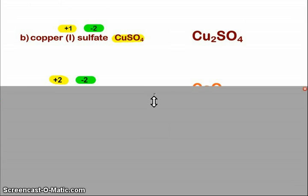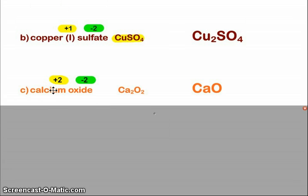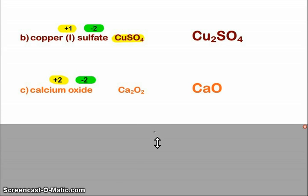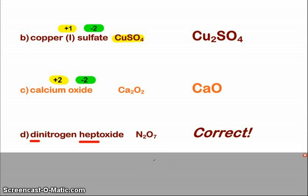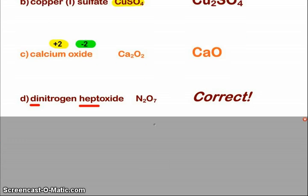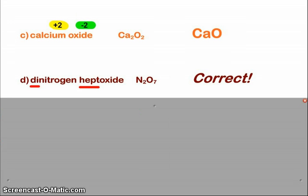For the calcium oxide, calcium is plus 2. It's end of school. Calcium is plus 2. Oxide is minus 2. So in that situation, I just need 1 of each ion, CaO. I don't drop the 2s. Dinitrogen heptoxide, that is correct. 2 nitrogens, 7 oxygens.